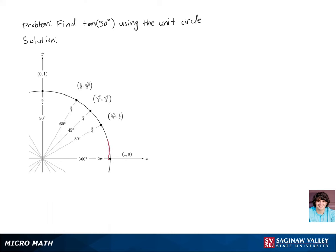Let's find tangent of 30 degrees. Let's rotate 30 degrees around our unit circle, and then tangent is just sine over cosine.